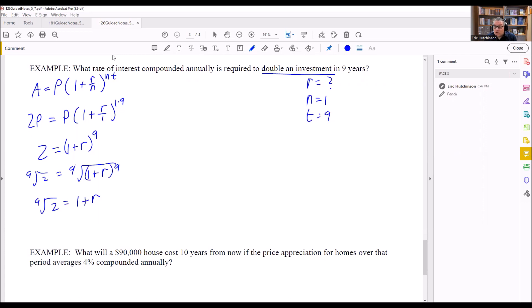So we get the 9th root of 2 is going to be equal to 1 plus R. Then from here, we can subtract 1 from both sides. And we'll get R is equal to the 9th root of 2 minus 1.